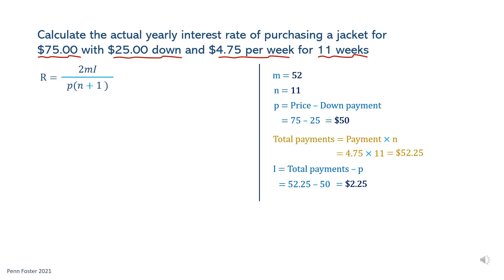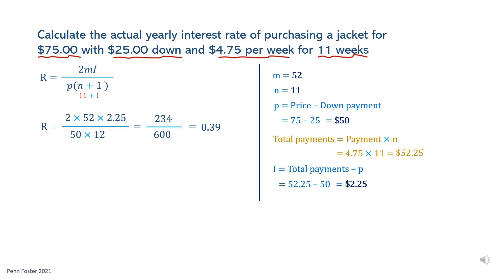Now plug in the values in the formula. On top, 2 times 52 times 2.25. Down in the denominator, 50 times 12. Again, 11 and 1 are added first before multiplying the sum times 50. The numerator is 234, and the denominator is 600. Divide 234 by 600 — it's 0.39. The last step is to multiply the decimal rate times 100. The interest rate is 39%.